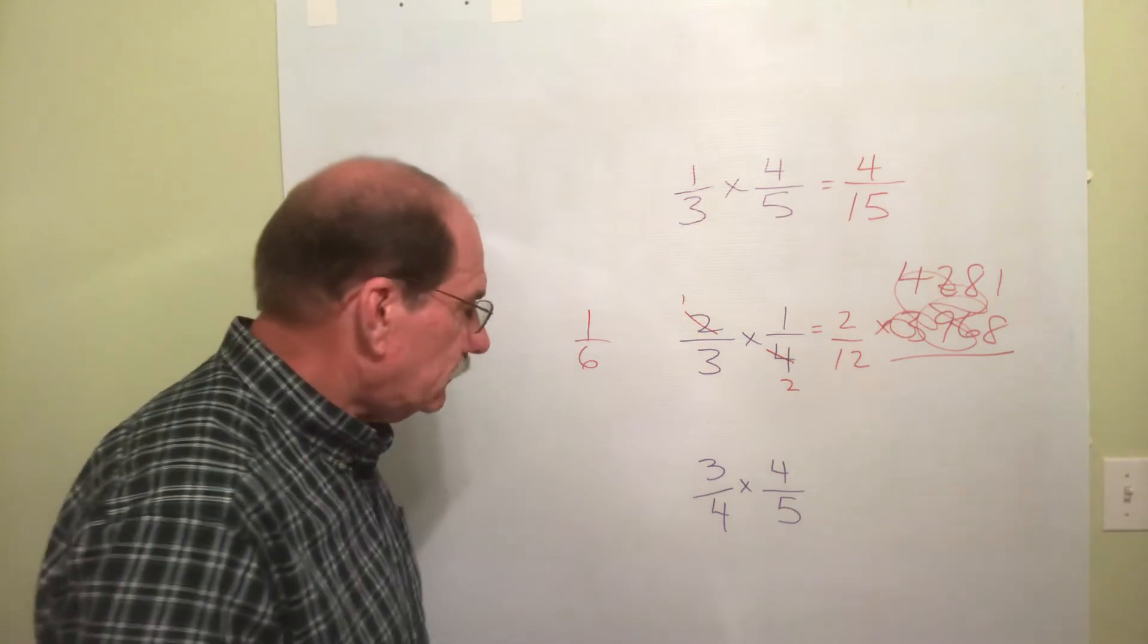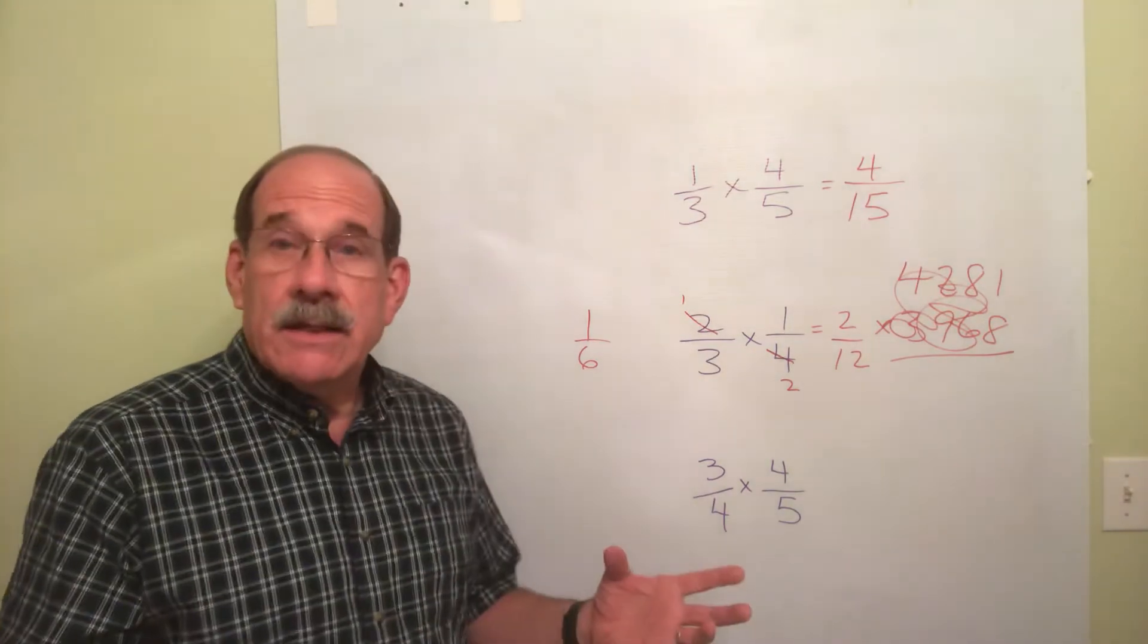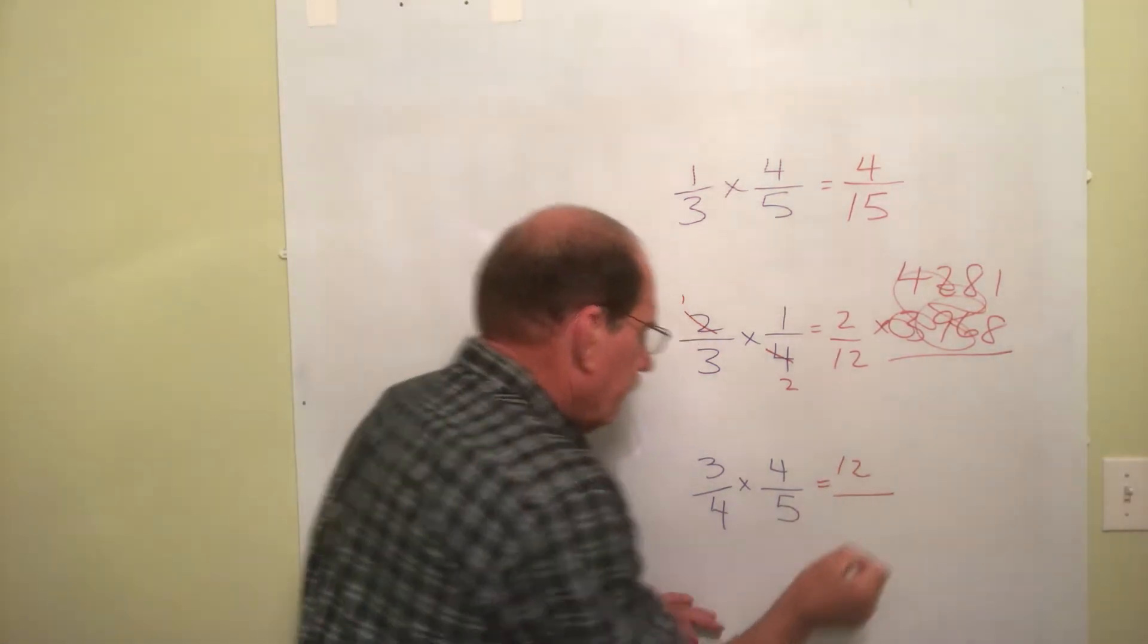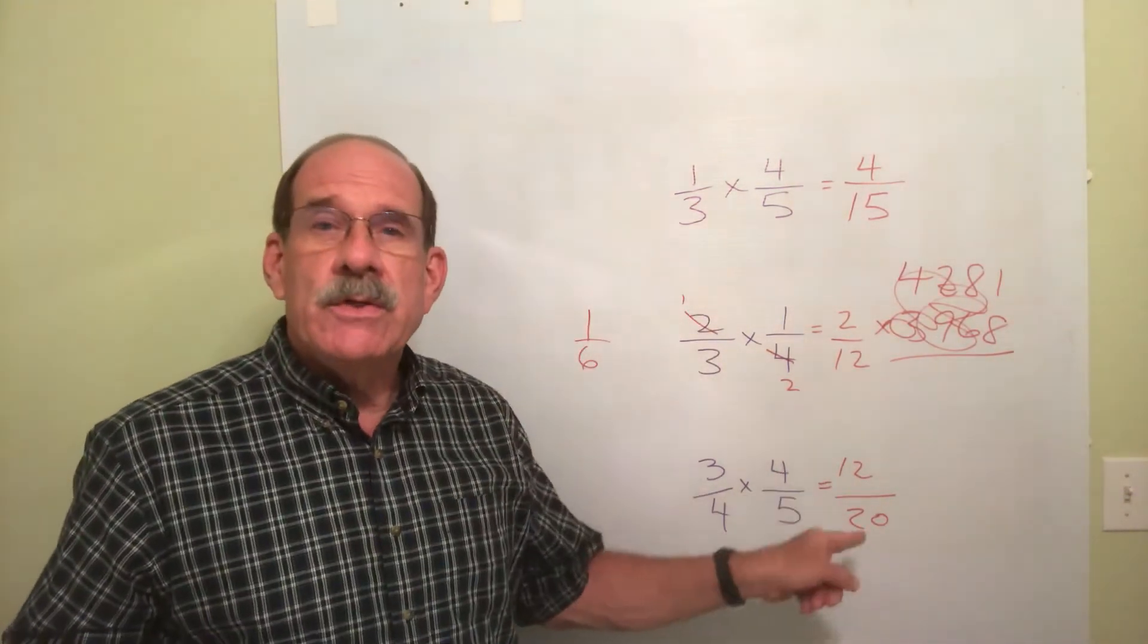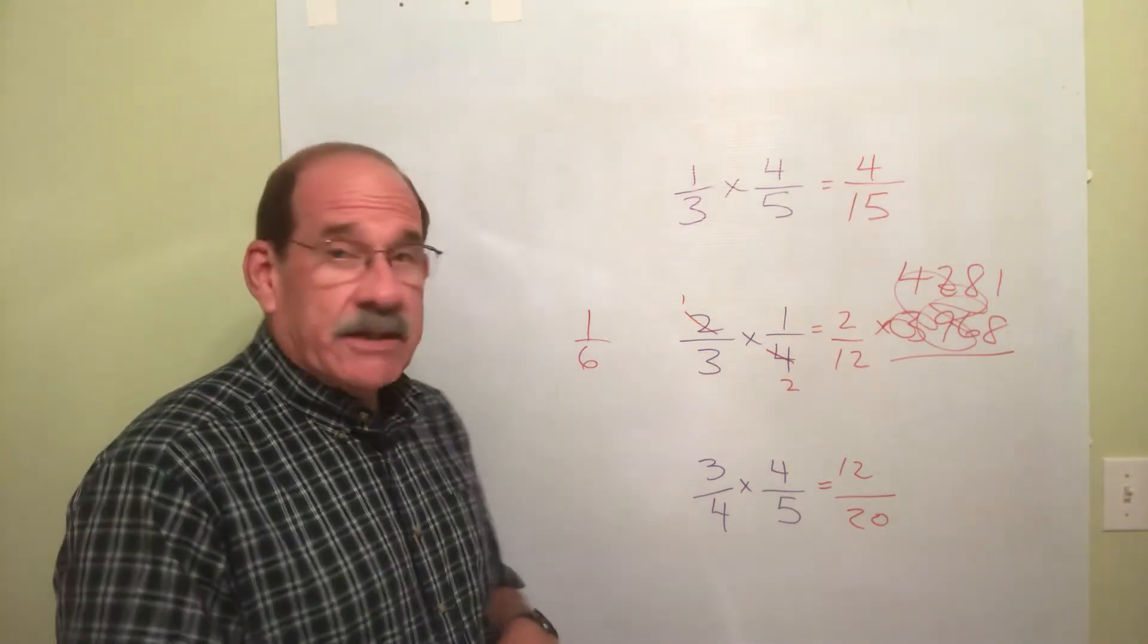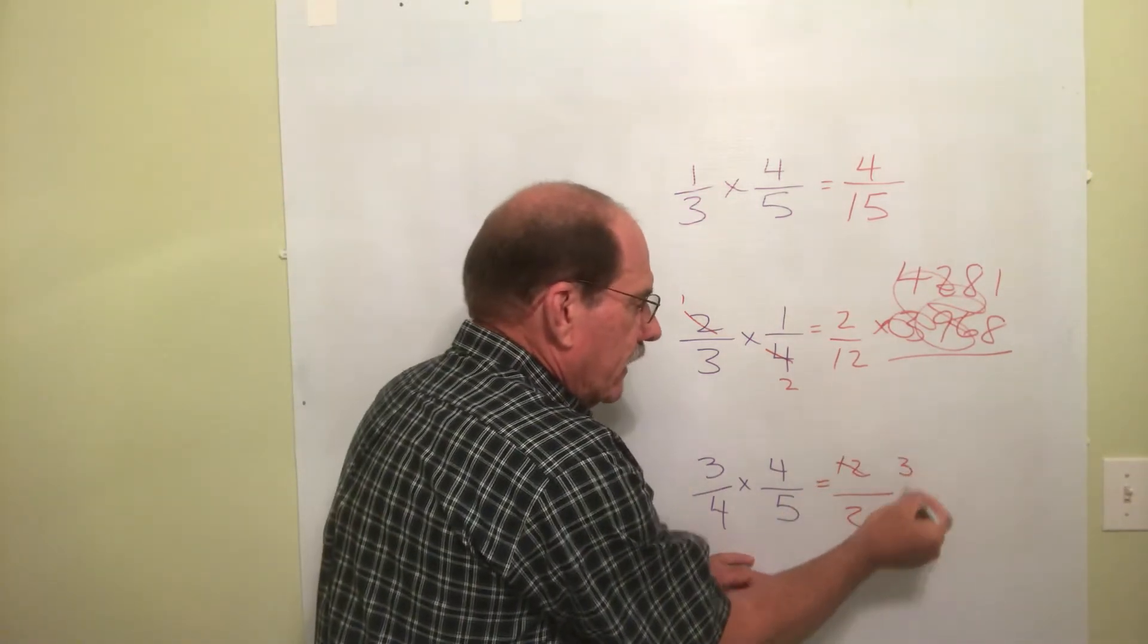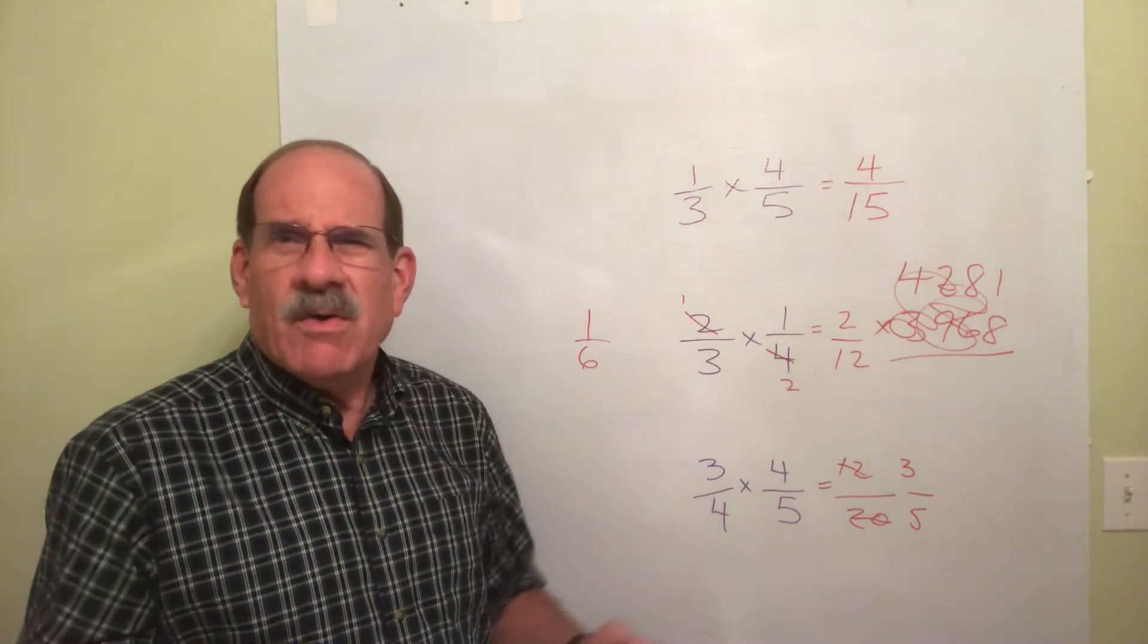Let me show you further. 3/4 times 4/5. Well, we can multiply the two numerators. 3 times 4, let's see here, that's 12. 4 times 5, that's 20. But now, you need to reduce this. And what can we divide both those by? Well, 2, that'll work. That's not the biggest we can do. How about 4? That'll work also. So, if we divide both these by 4, divide this by 4, that's 3. Divide this by 4, and that's 5. But it took all that effort.